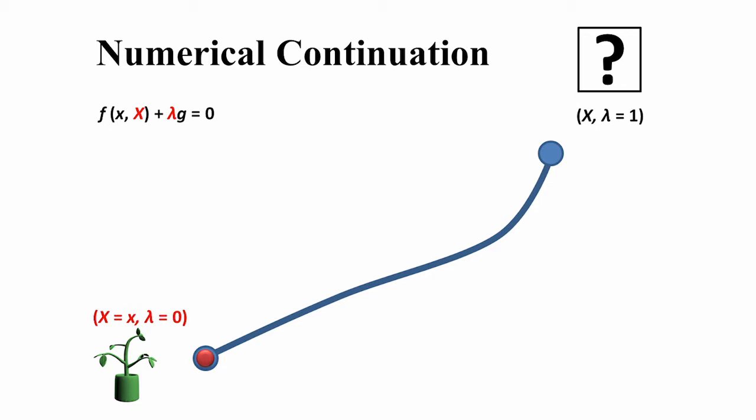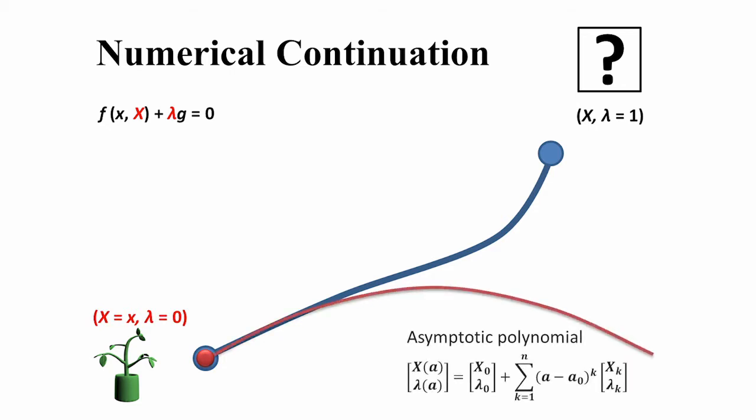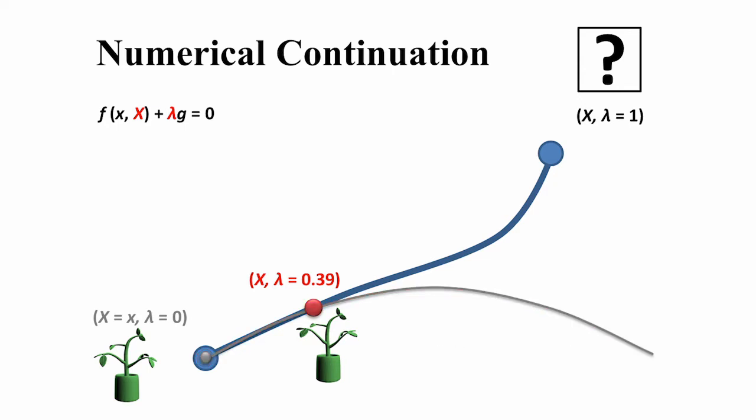At each point, we use an asymptotic polynomial expansion to locally represent the solution branch. Using the asymptotic expansion, we trace the solution branch as far as possible until the convergence radius is reached. We repeat this process until we obtain the desired rest shape.